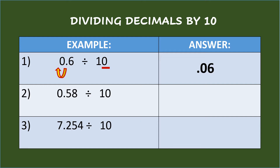Second example: fifty-eight hundredths divided by ten. The divisor has one zero, so move the decimal point of the dividend once to the left, then put the decimal point afterwards. So the answer is fifty-eight thousandths.